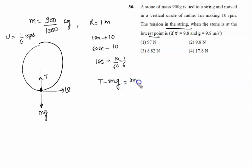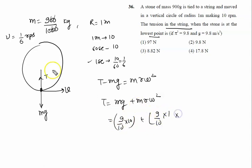This is given by mrω². Because we are given the frequency, tension is given by mg plus mrω². Mass is given by 9 by 10, gravity is also 10, plus m that is 9 by 10, radius that is 1, omega is given by 2π times frequency, so we will write 2π times 1 by 6.